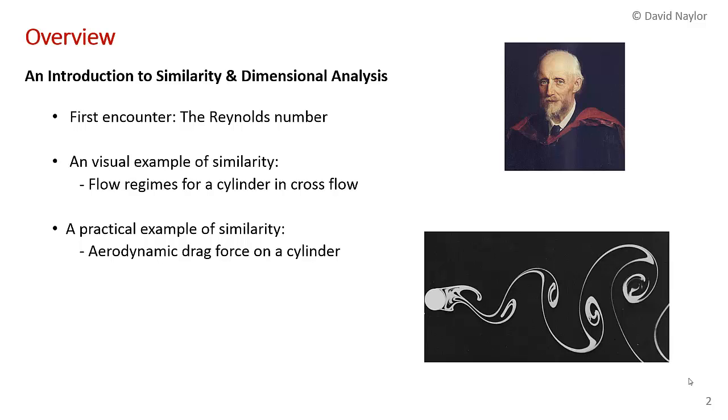You've already encountered a similarity parameter in this course, it's called the Reynolds number. You encountered it particularly in lab number two where we talked about flow transition in a pipe.